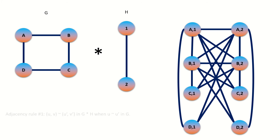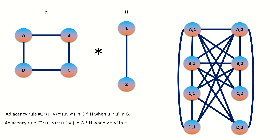By the first adjacency rule, vertex C1 will connect to vertices B1, B2, D1, and D2. By the second adjacency rule, C1 will connect to vertices A2, B2, C2, and D2.